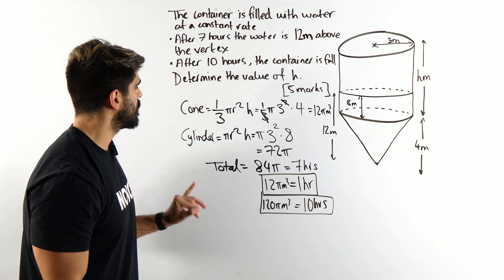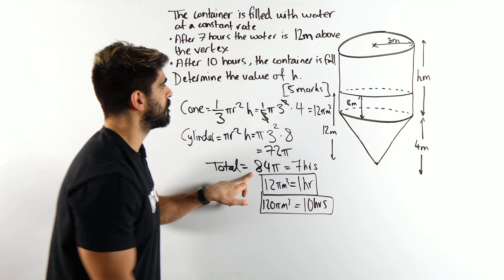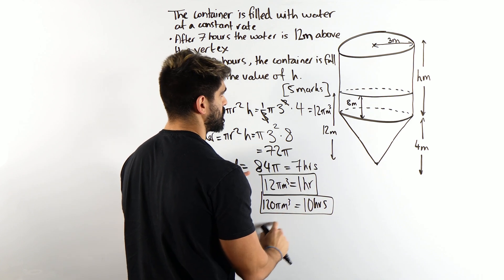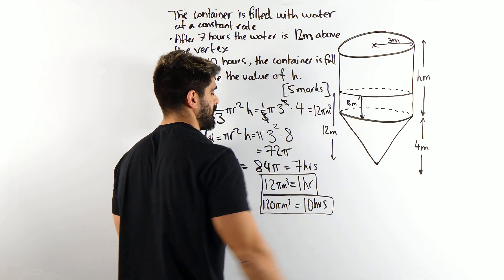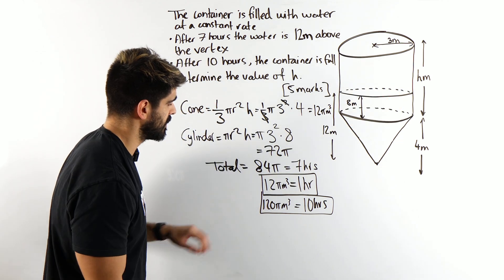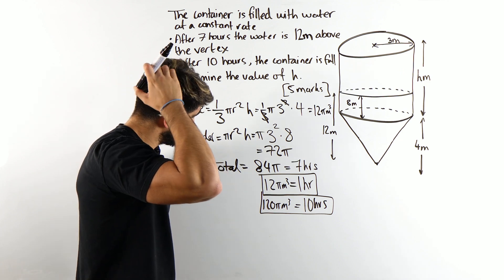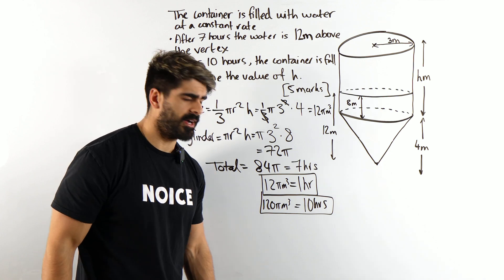But we already know that 84 pi is this. So what's the difference between these two? That'll give us what's left, which will help us work out h. So the difference between 120 pi and 84 pi is 36 pi.